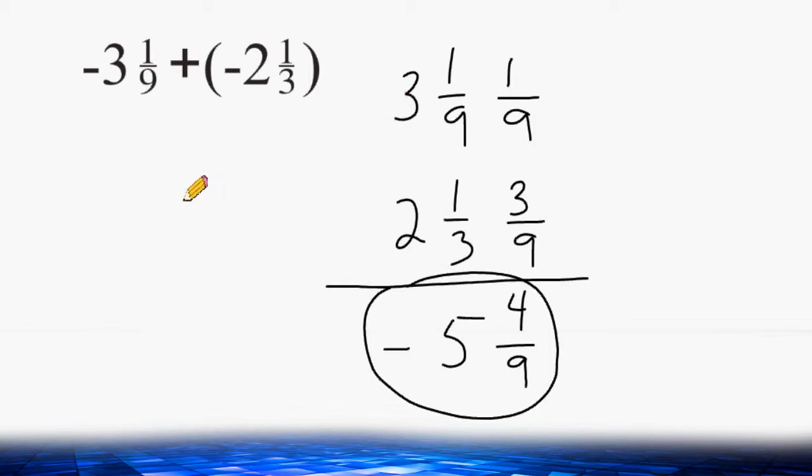So one way that we can think about this problem is that you started negative 3 and 1/9 below 0, and then you went negative 2 and 1/3 further below 0 from the location of negative 3 and 1/9.